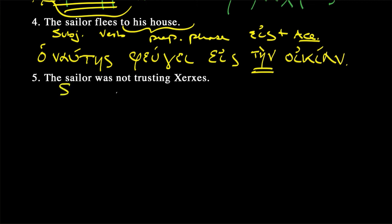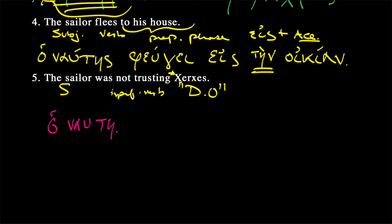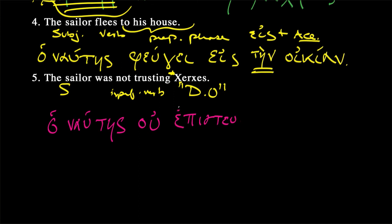The sailor was not trusting — imperfect verb and it's negative, so we're going to need an ou or ouk in there. So: ho naútēs. "Was not trusting" — we put ou in first. The verb trust is pisteúō. Drop the accent, drop the personal ending, get to the stem, make it past tense by adding the indicative augment, then make it third person singular by adding epsilon — and potentially a movable nu. This is short, so the accent skips back to the antepenult: epísteu-e or -en.